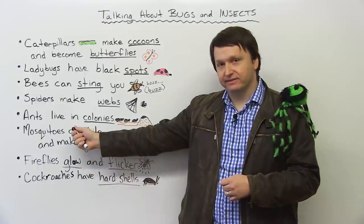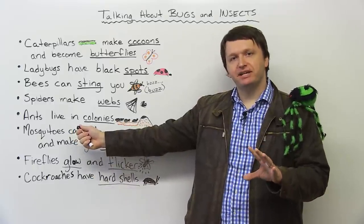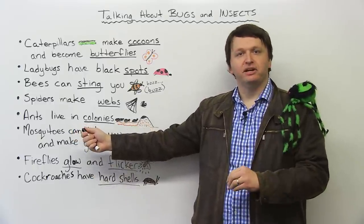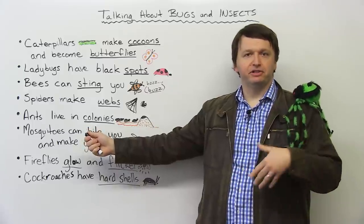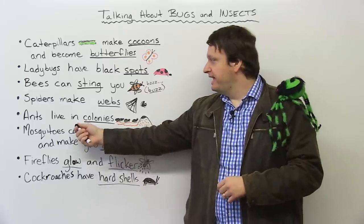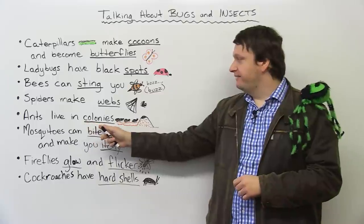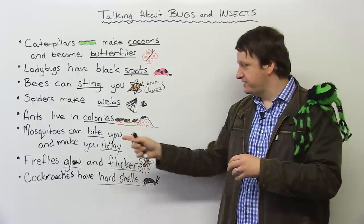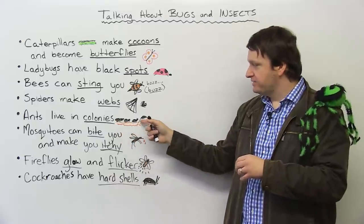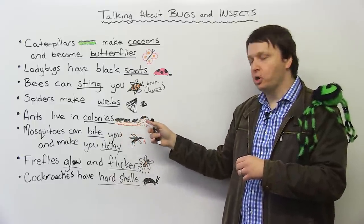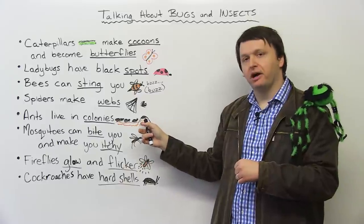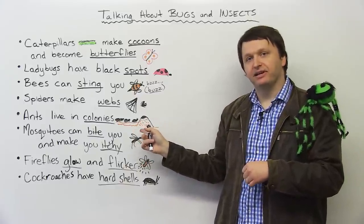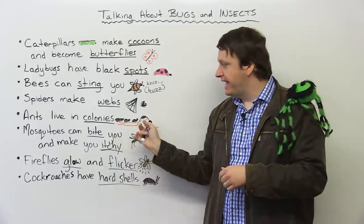Next, we have ants. The same pronunciation as your aunt, which is the sister of your father or your mother. Ants live in colonies — so large groups, or colonies. And here's a picture of ants going to their home. This is actually called an ant hill. Ants live in colonies, in ant hills.